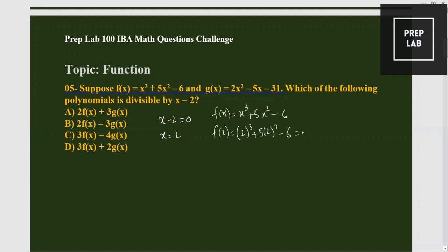Okay, so that will become 2³ = 8, 5 into 4 = 20, and minus 6 times 2. So that is equal to 8 plus 20 minus 12, that is 22.